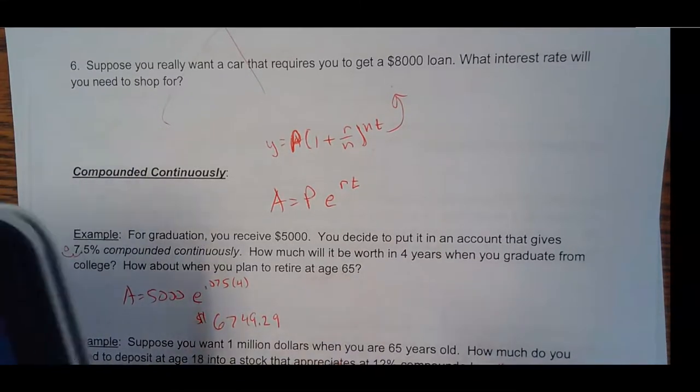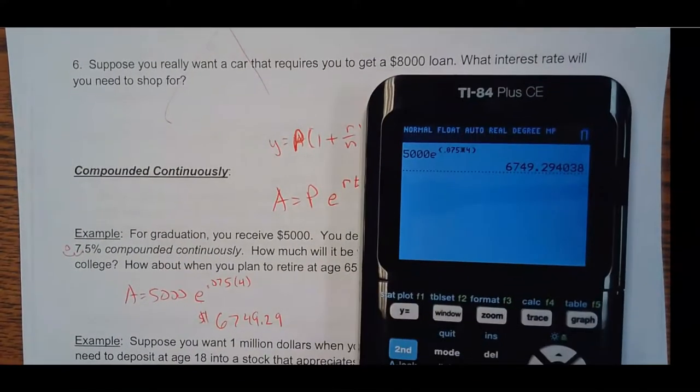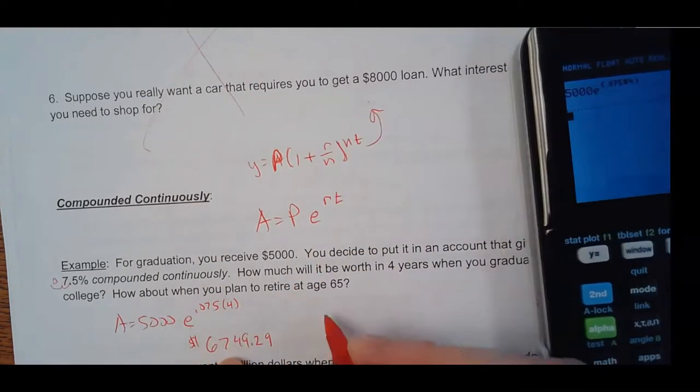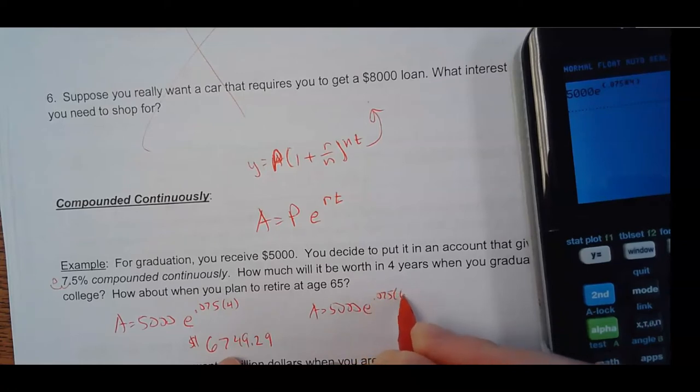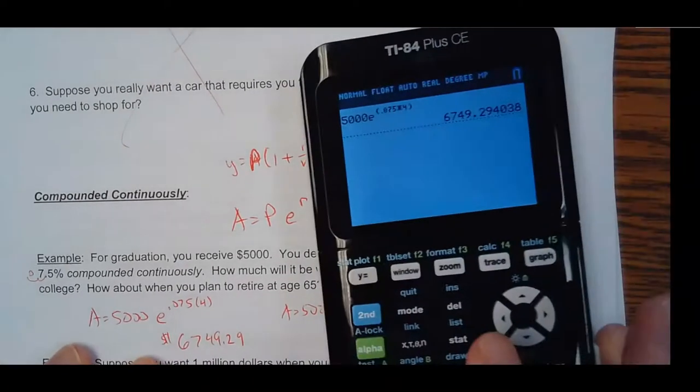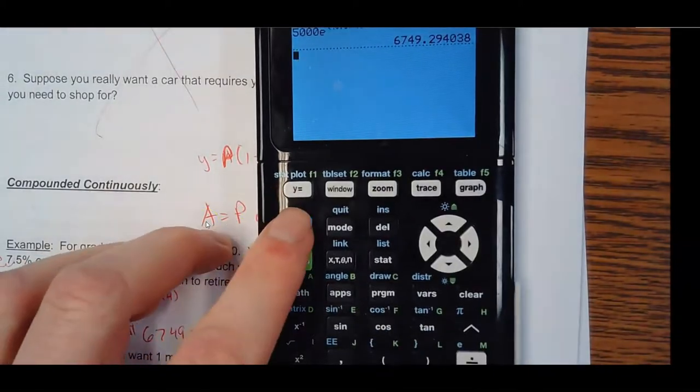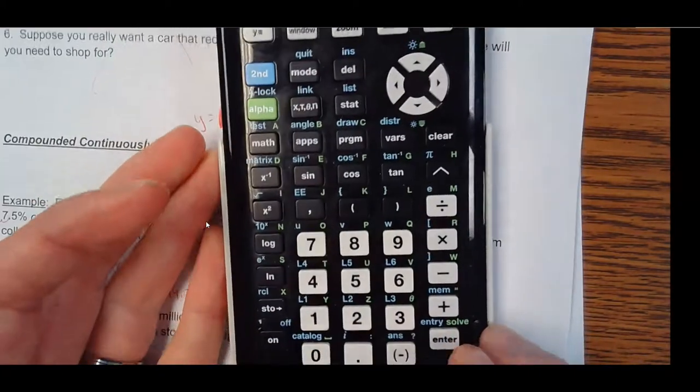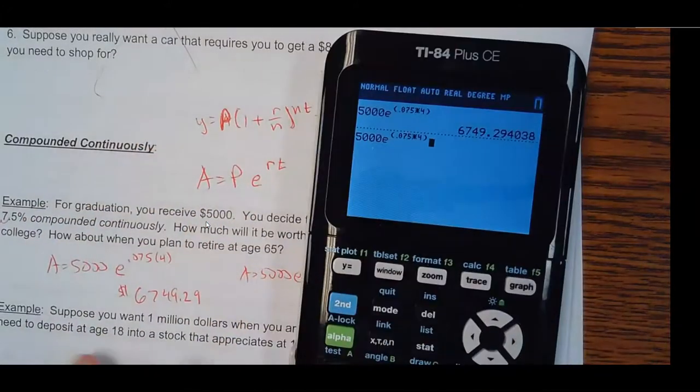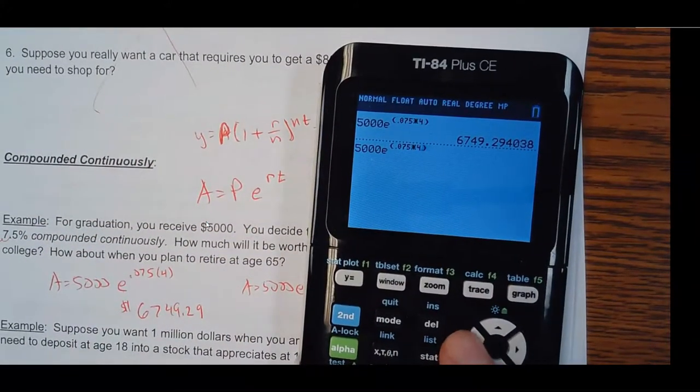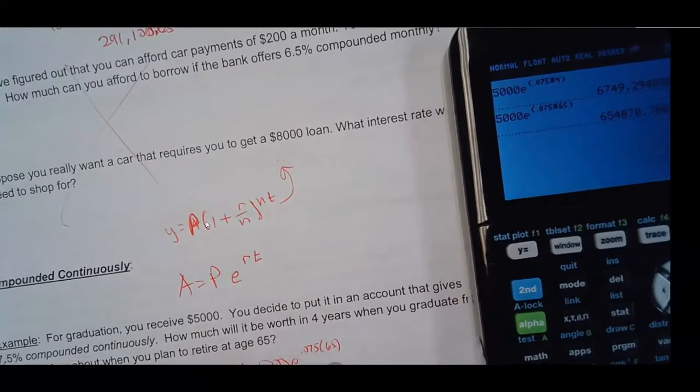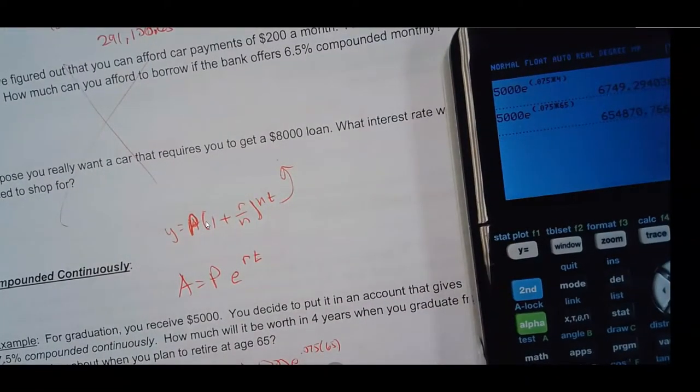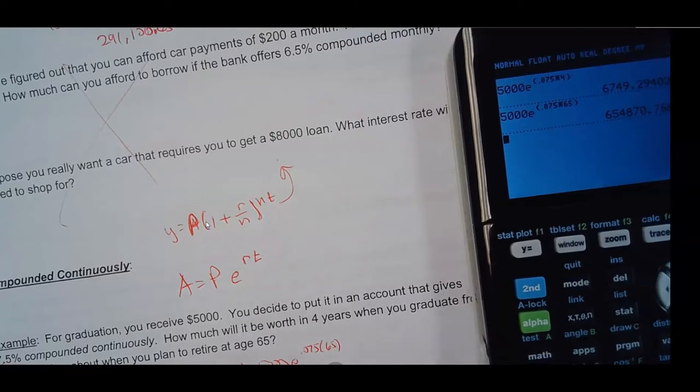Now, at the end of 65 years, if I want to bring something, basically I'm just changing the four to a 65. So A equals 5,000 E to the 0.075 times 65. If you want to bring up the last thing that you entered, push 2nd. And then there's an entry button right here. Entry. And that's like a copy and paste. I'm going to go back and change that four to a 65, end parenthesis. $654,000. So $654,870.77.